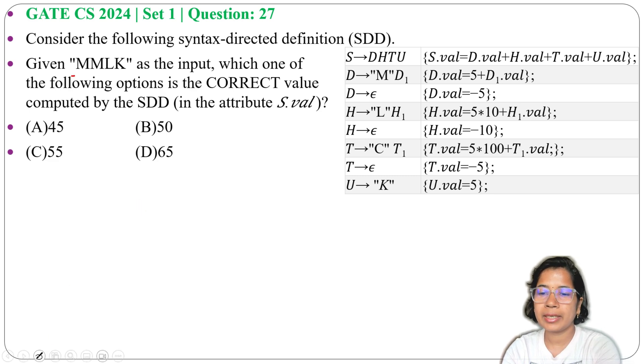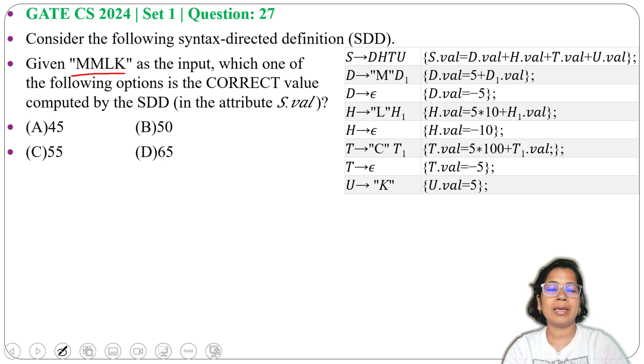So first step, I will create a parse tree for generating MMLK. Then I will evaluate by bottom-up order and I will use these definitions.